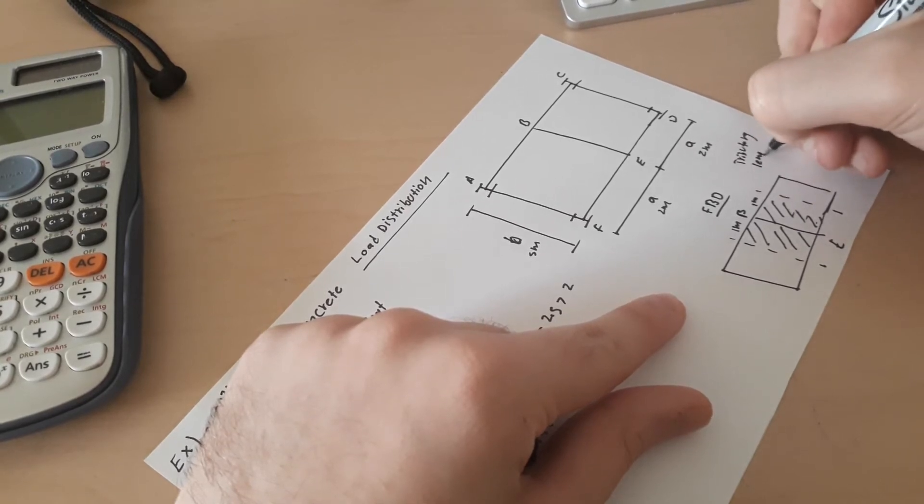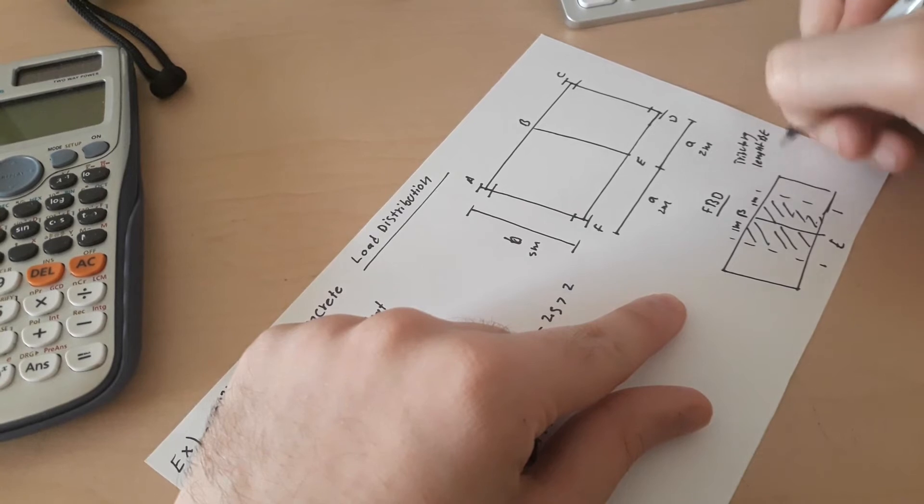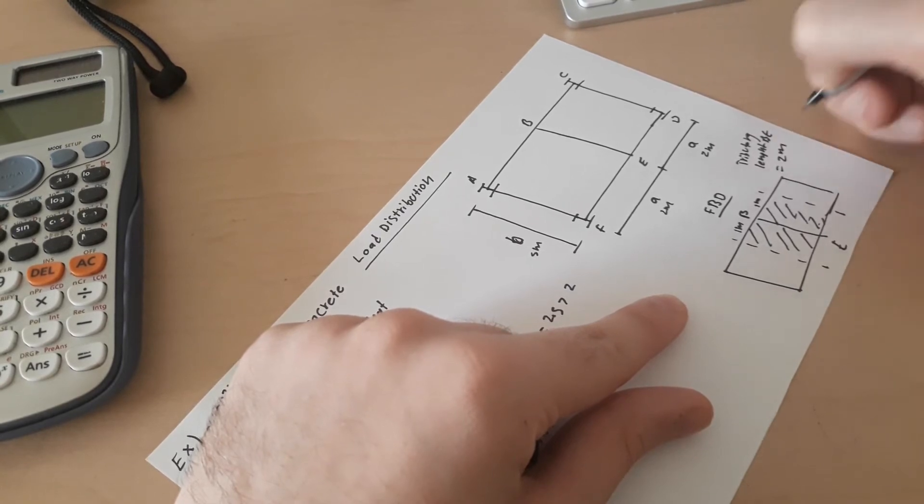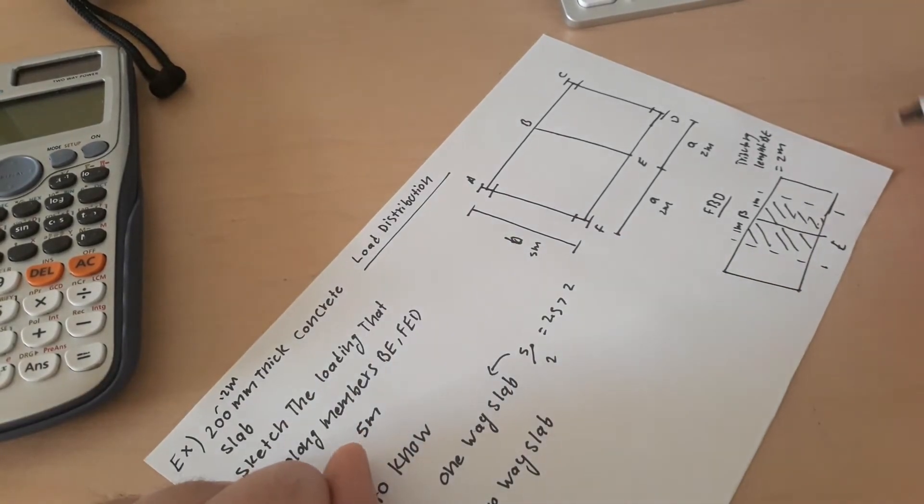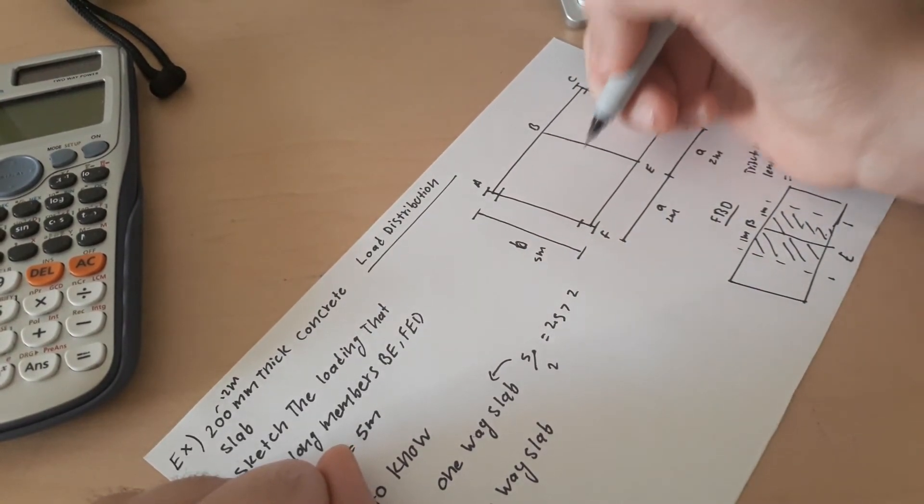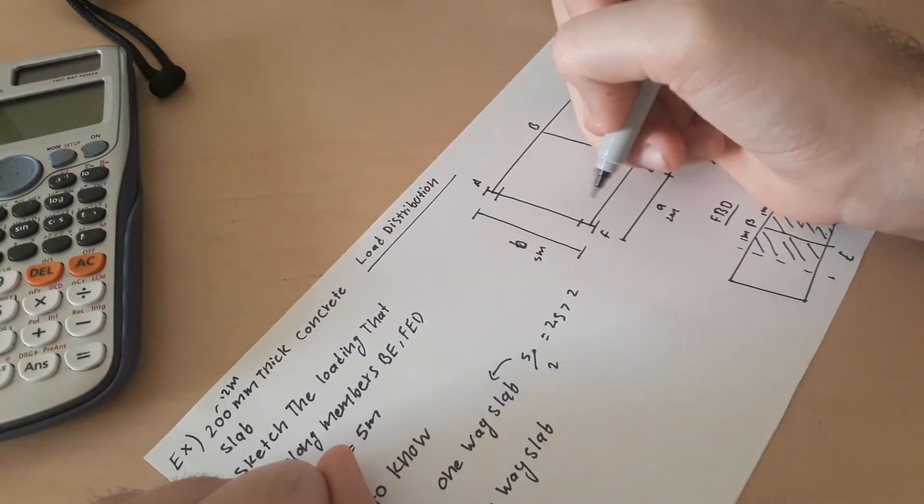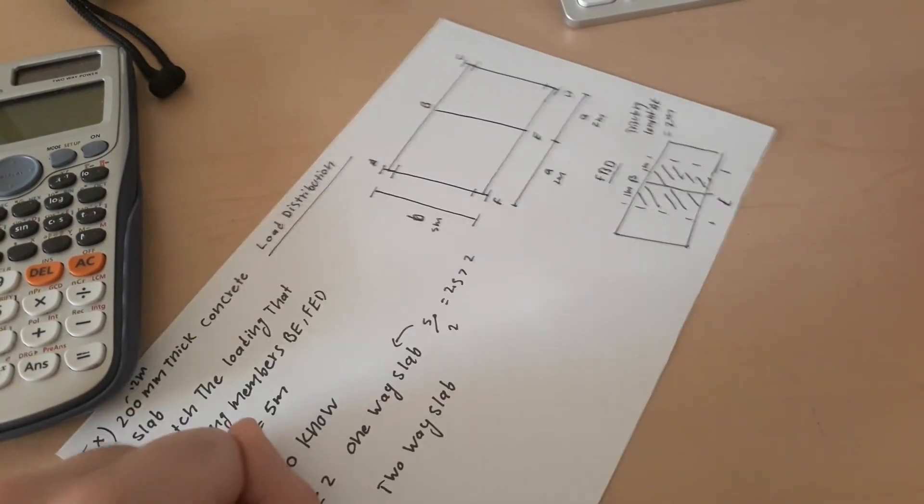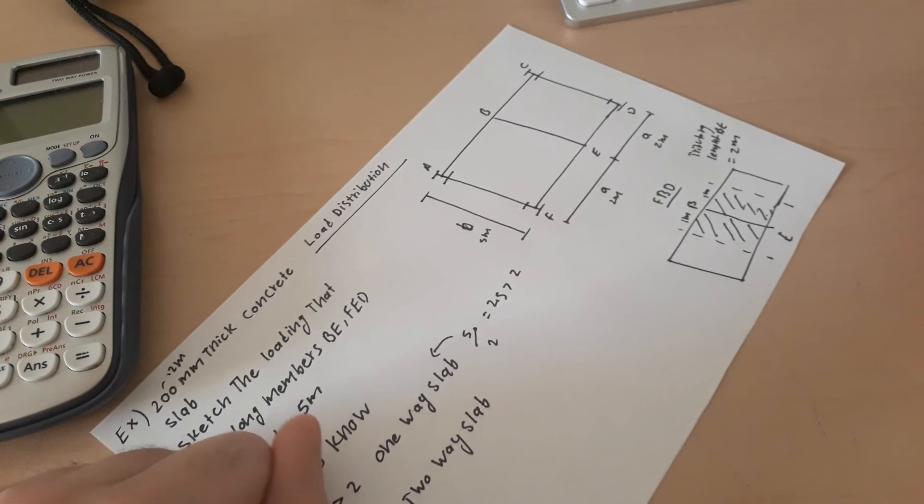So meaning that one meter right here and one meter right here. So the tributary length for BE equals to 2 meters. However, let's say we were analyzing AE. For AE since it's not in the middle it's only one meter, half of this one, but for this is only 2 meter.